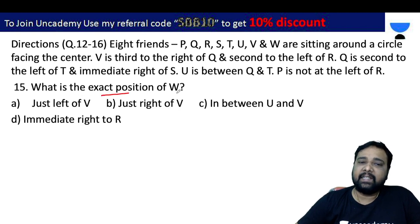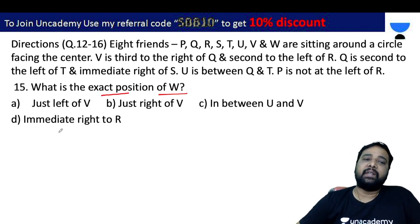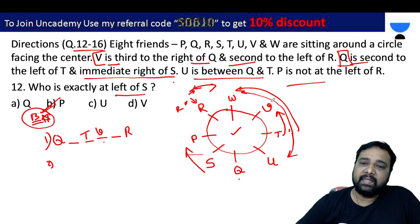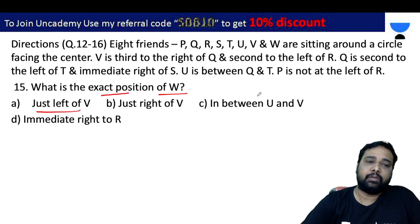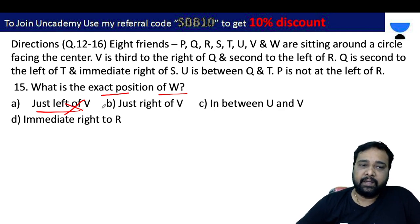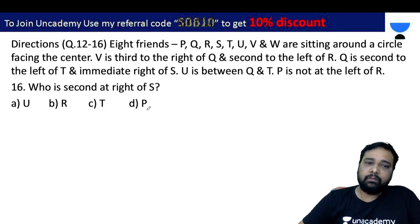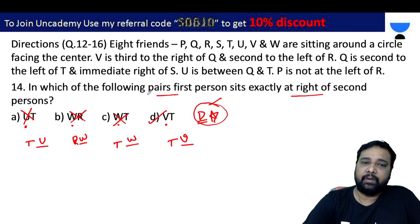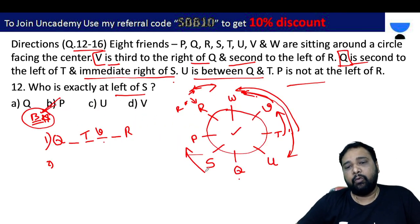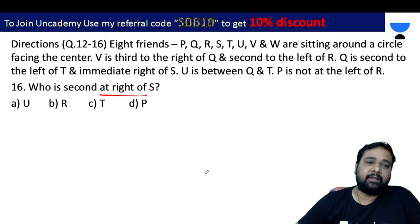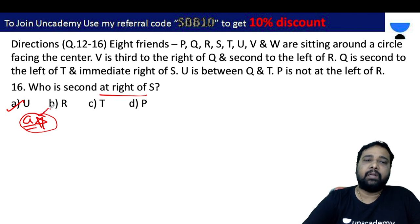Problem 15: What is the exact position of W? W is just to the right of V. V is to the left of W — just right of V. The answer is correct. Problem 16: Who is second to the right of S? First person Q, second person U. So second right of S is U. The answer is A.